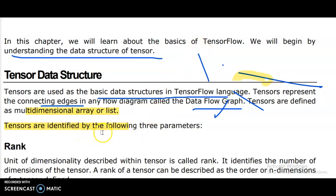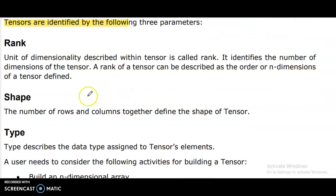Tensors are identified by the following three parameters: rank, shape, type. Unit of dimensionality described within tensor is called rank.